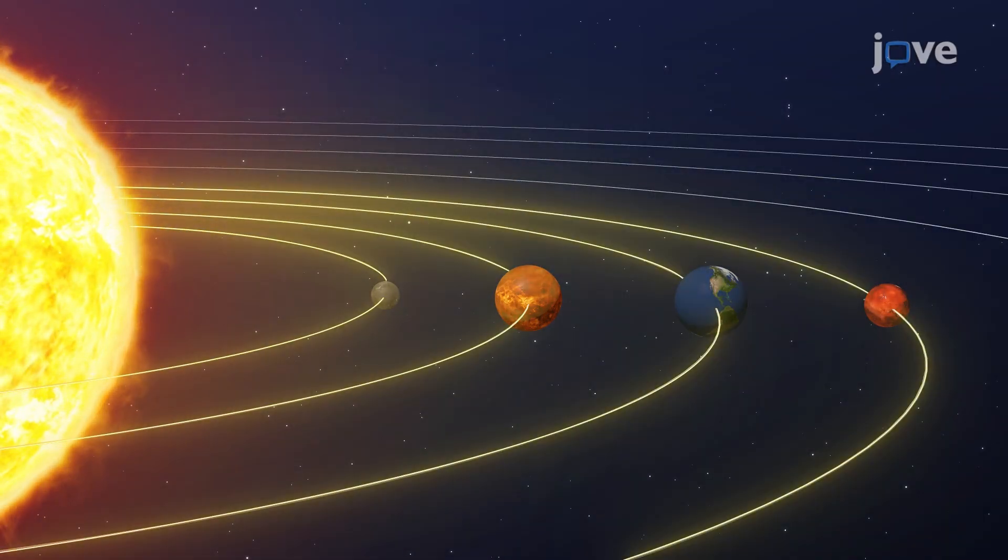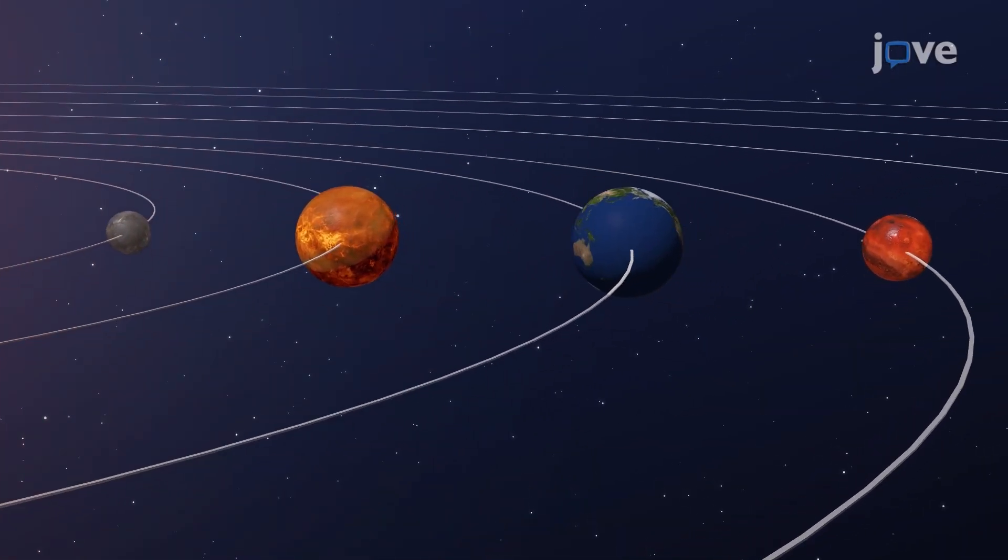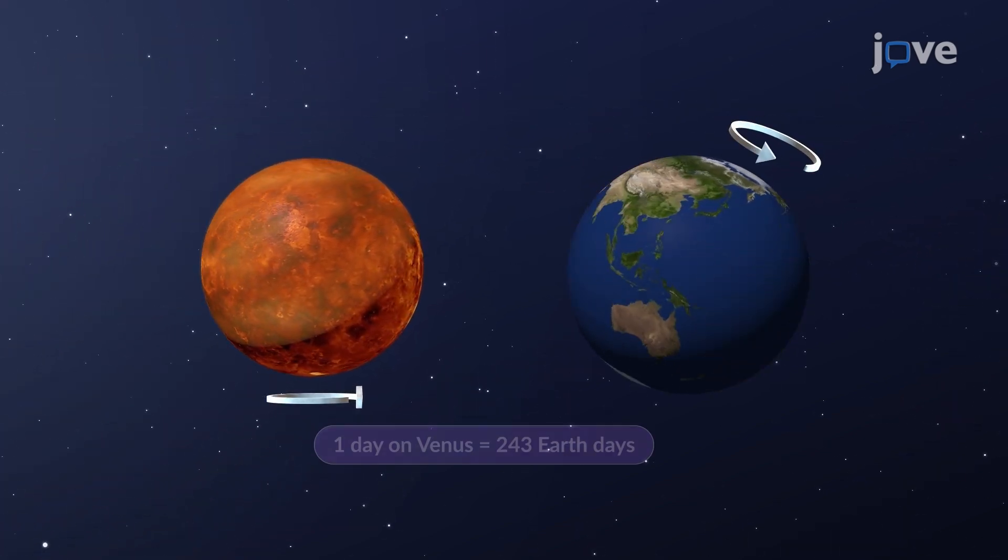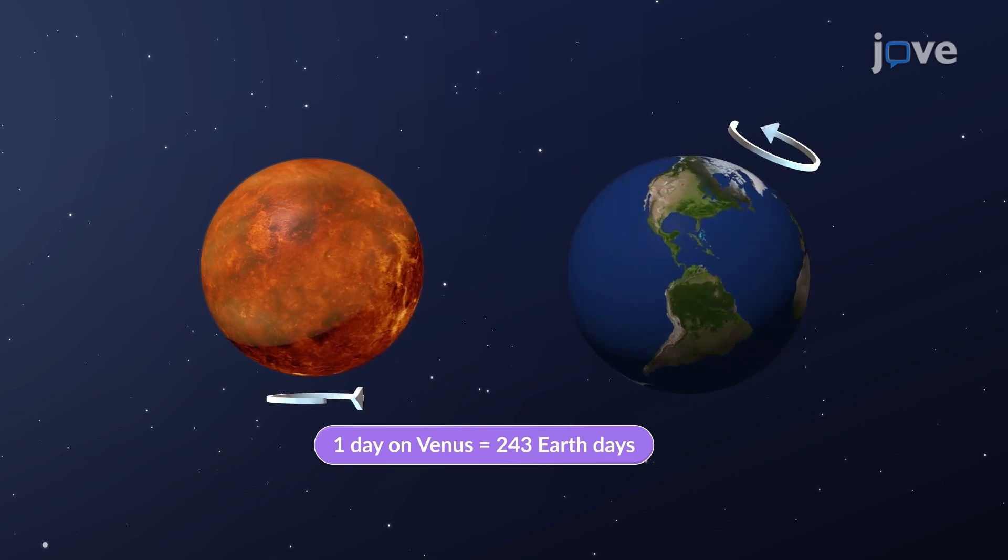Their orbits around the sun are shorter, and they spin slowly. Among the four, Venus spins in the opposite direction of Earth, and one day on Venus lasts as long as 243 Earth days.